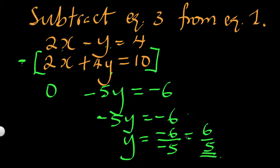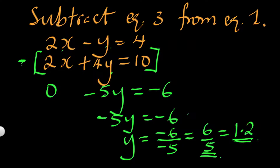If my answer is required to 3 decimal places, I punch my calculator and round off. 6 divided by 5 — that's 1.2. I have my y. Once I have my y, I can find my x using the method of substitution — I'm going to substitute my value of y into one of the equations. I'm going to use equation 2.